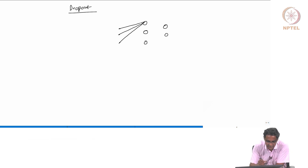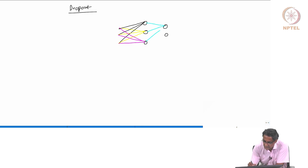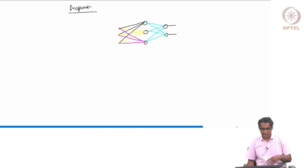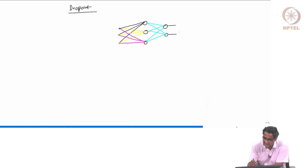So what you will typically have are these connections — weights going from each input to each neuron, and then this goes here, this goes here, this goes here, and similarly these connect forward, and outcomes something. Now you of course have a large network in practice, but dropout actually means deactivating one of these neurons.